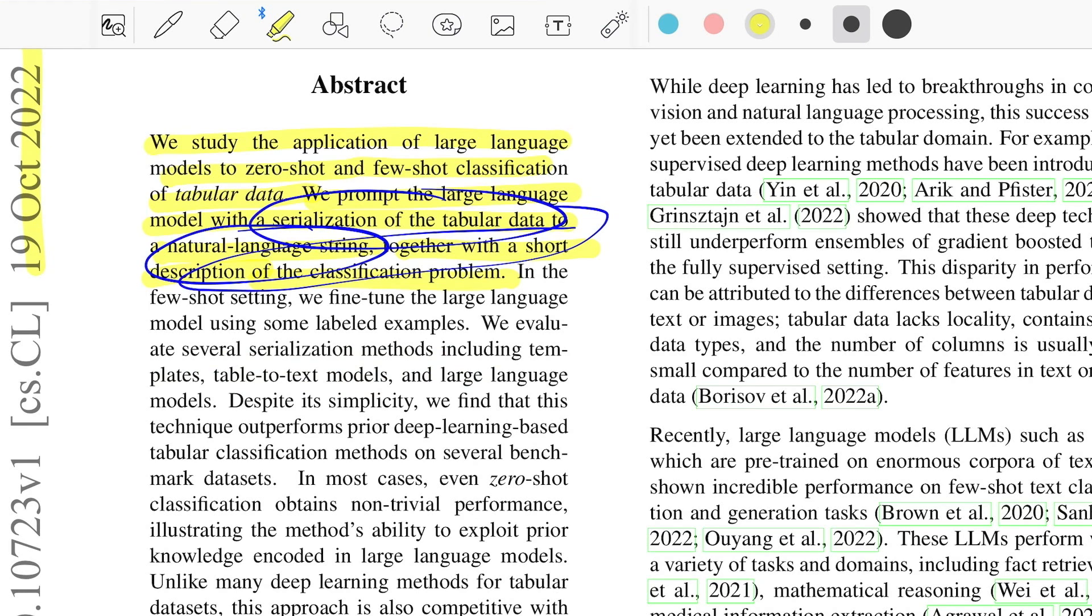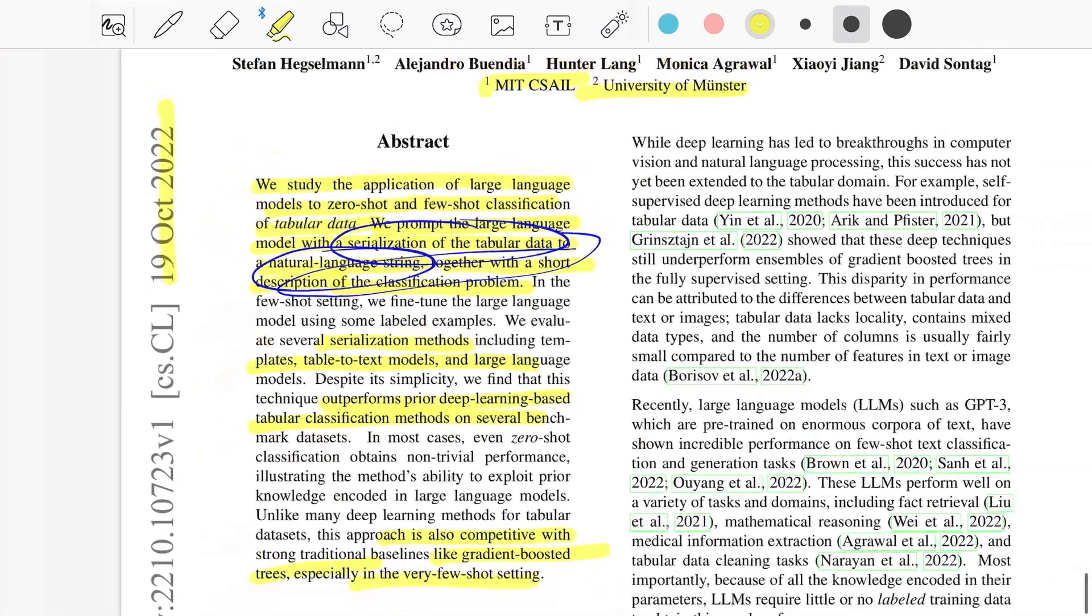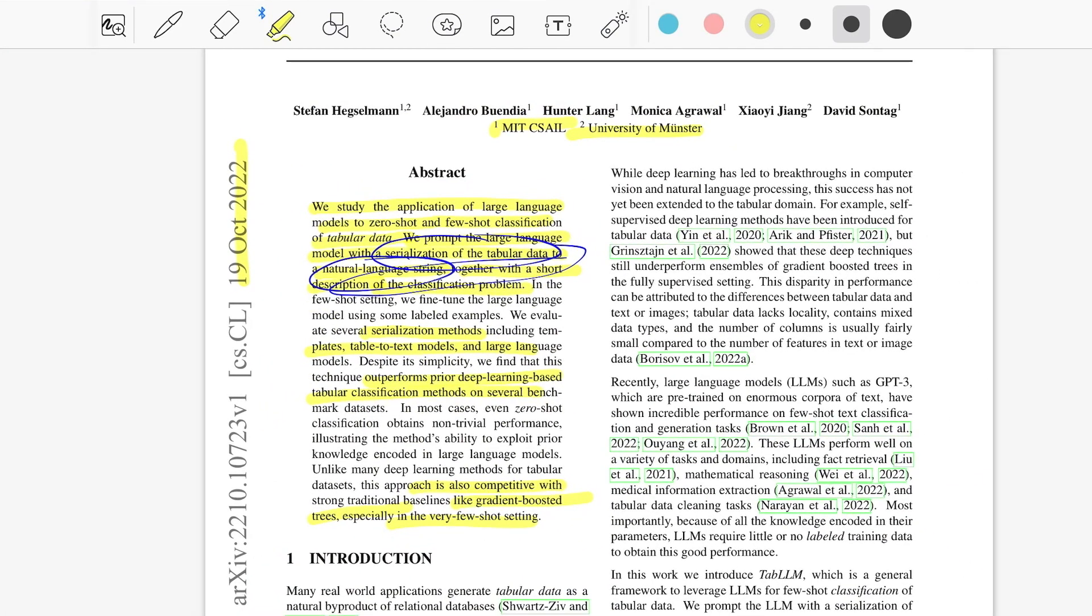They tried various serialization methods starting from template-based to table-to-text and other language models. It's really interesting to see that they found this method to be outperforming prior deep learning-based tabular classification methods on several benchmark datasets. It's also really competitive compared with traditional methods like gradient boosting trees, especially in few-shot settings where data is really limited for these models to learn in a supervised way.